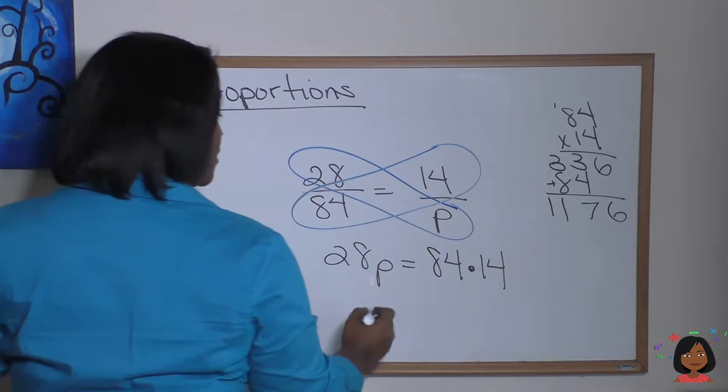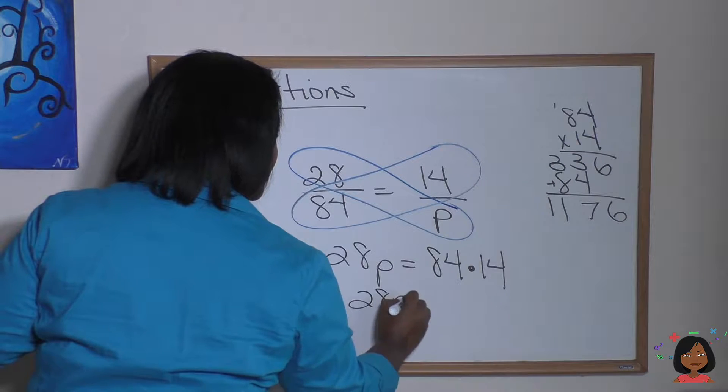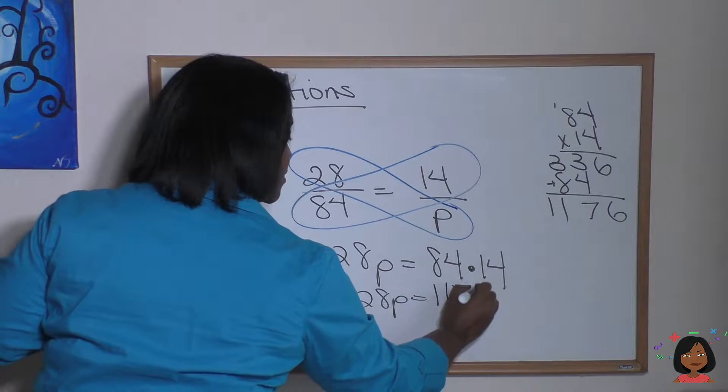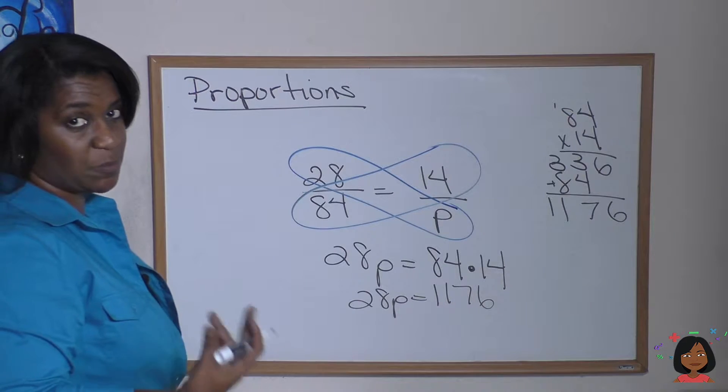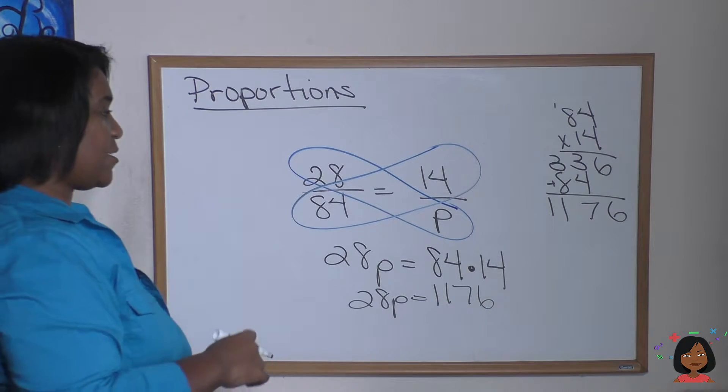Here we go. 1, 1, 7, 6. So 28p equals 1, 1, 7, 6. Now we have a missing number in multiplication. So we divide to find the answer. We're going to do 28 into our 1, 1, 7, 6.